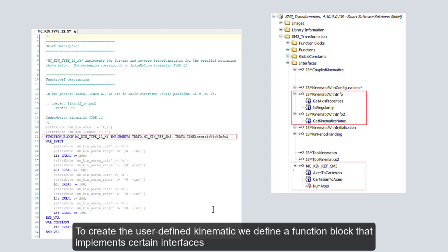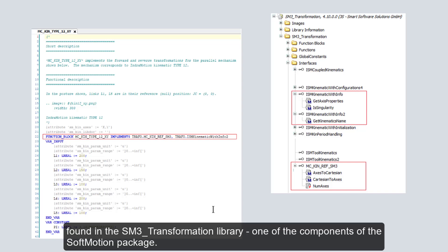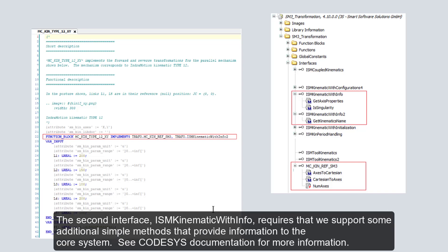To create the user-defined kinematic, we define a function block that implements certain interfaces found in the SM3 transformation library, one of the components of the SoftMotion package. In our case, we implement MC_KIN_REF_SM3, which requires that our function block include methods AxesToCartesian, CartesianToAxes, as well as property NumAxes. We'll consider these methods in detail later.